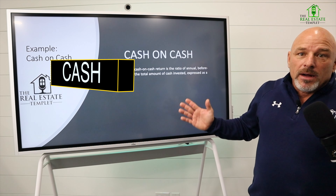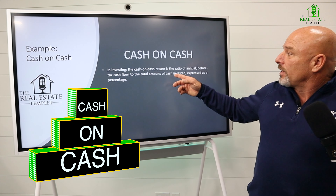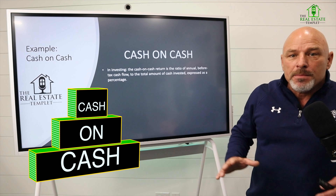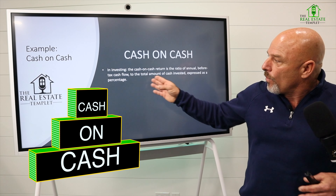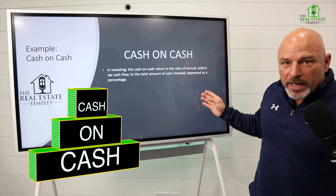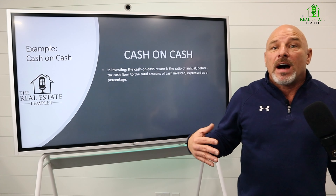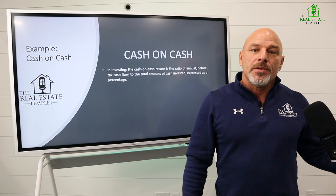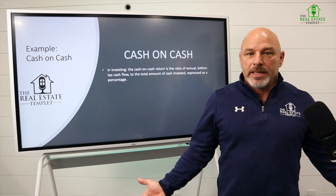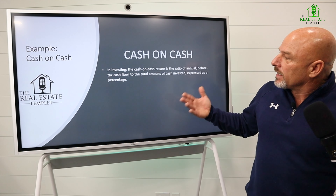So today we're going to talk about cash on cash. What is cash on cash? The cash on cash return is the ratio of annual before-tax cash flow — so it's your money before you pay any taxes on it — to the amount of cash invested, expressed as a percentage. Basically, you put $5,000 in a deal and you get $500 a year off of it — you're making 10% cash on cash.